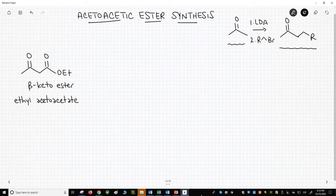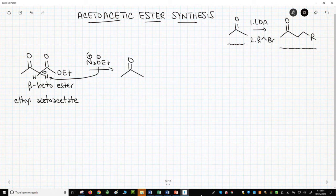So we can treat this beta-ketoester with sodium ethoxide, a base, because the pKa of beta-ketoester is low, around 12. We can deprotonate it to make an enolate with a simple base like sodium ethoxide.